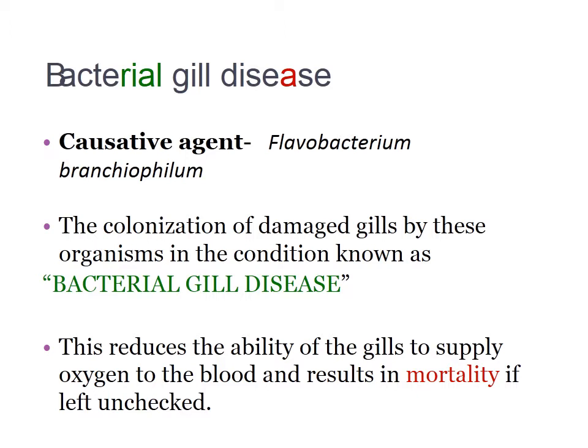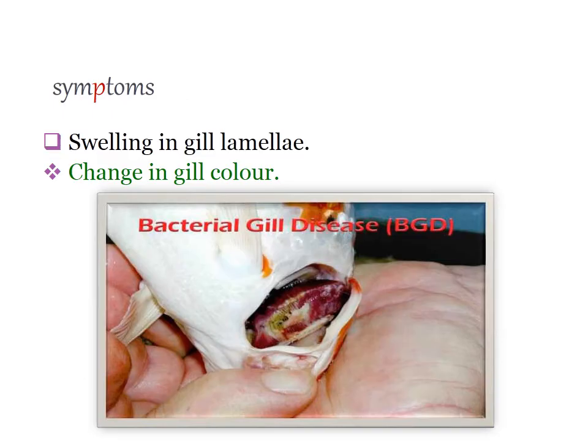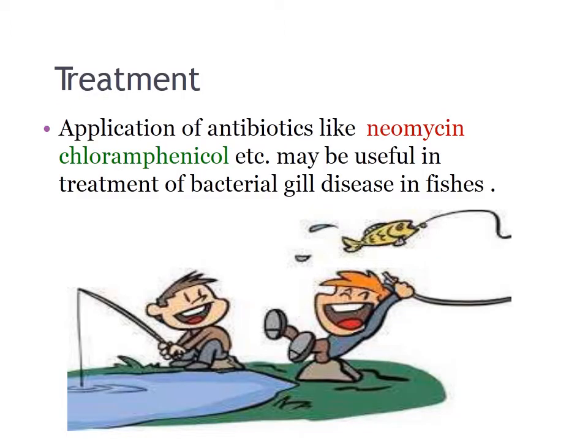Bacterial gill disease: the causative agent is Flavobacterium branchiophilum. Colonization of damaged gills by these organisms is the condition known as bacterial gill disease. Colonization occurs within the gill, which prevents the supply of oxygen to blood and results in mortality if left unchecked. Changes in gill color and swelling in the gill occur. Application of antibiotics like neomycin and chloramphenicol may be useful in treatment.